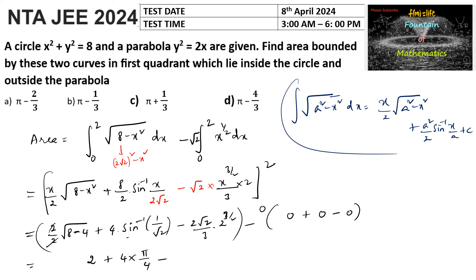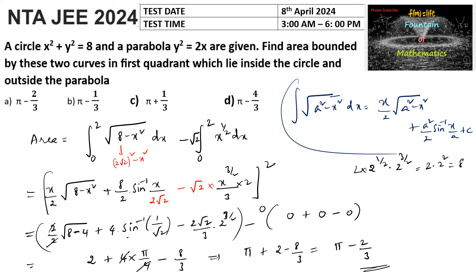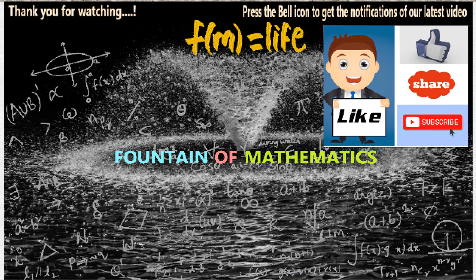For the remaining term: √2 · 2^(3/2) = 2^(1/2) · 2^(3/2) = 2² = 4, multiplied by (2/3) gives 8/3. So the total is π + 2 - 8/3 = π + (6 - 8)/3 = π - 2/3. The required area is π - 2/3, which is option A.